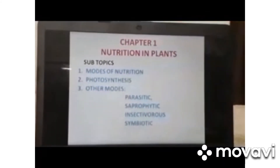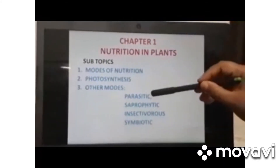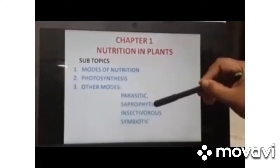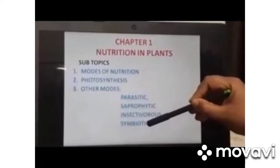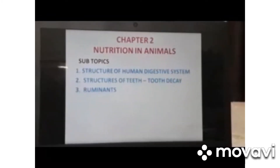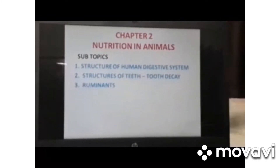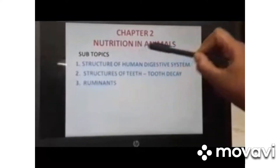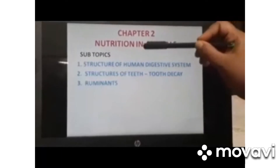Other modes of nutrition include Parasitic, Saprophytic, Insectivorous and Symbiotic Mode of Nutrition. Next we are moving to Chapter 2 which is Nutrition in Animals.